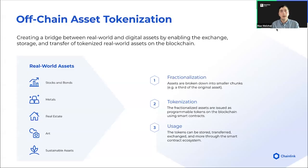What I want to bring up is off-chain assets that are tokenized. If we think about the tokens we interact with today, there are those that are native to the chain, like Ether and Bitcoin, and then there are those that are representations of assets held off-chain or cross-chain. Examples of this would be a fiat-backed stablecoin where the reserves are dollars in a bank account, wrap Bitcoin on Ethereum where the reserves are on Bitcoin, and tokenized gold where the representation is backed by gold bars in a vault. Other examples include financial instruments, precious metals, real estate, art, and sustainable assets like carbon credits.